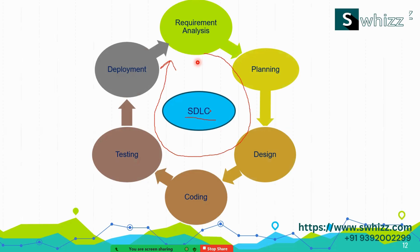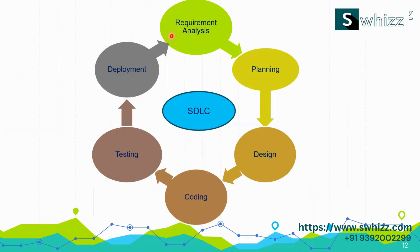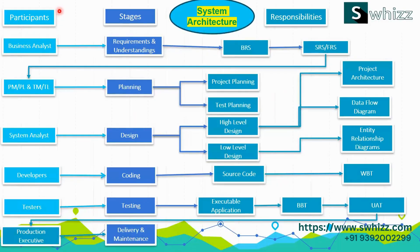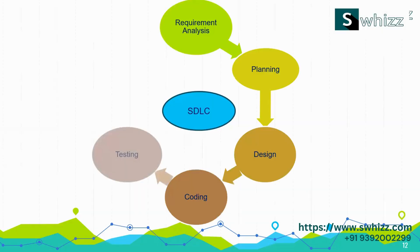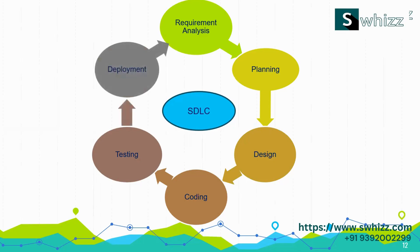We have discussed in detail each phase, the participants, and their responsibilities. The system architecture shows the participants, the phase they perform in, and exactly what their responsibility is. These phases also contribute in different models — like the sequential model and the incremental or iterative model — which we will discuss in the next session.